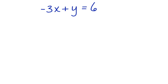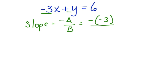Here's the equation that we were just working with. Negative 3x plus y equals 6. Let's find the slope. The slope is found by putting negative a over b. Our a value in this case is a negative 3, and our b value is 1. So we put a negative negative 3 over 1. A double negative is a positive, so our slope is 3.